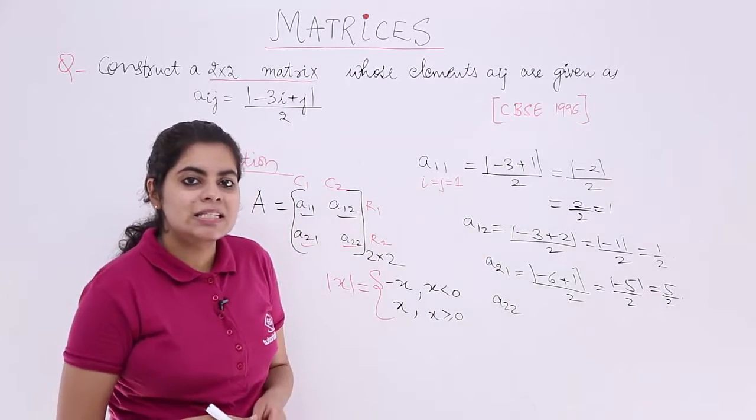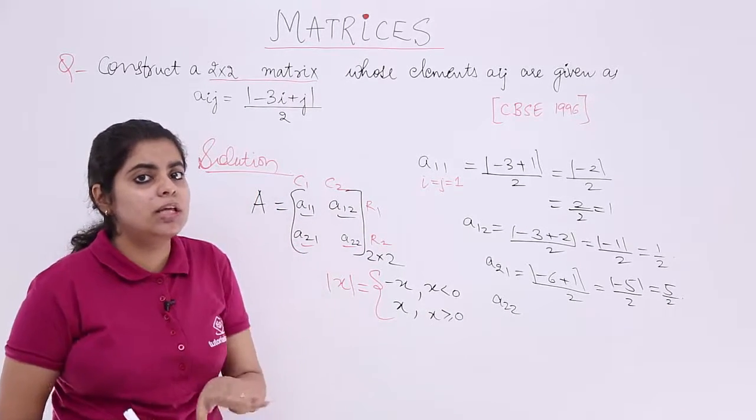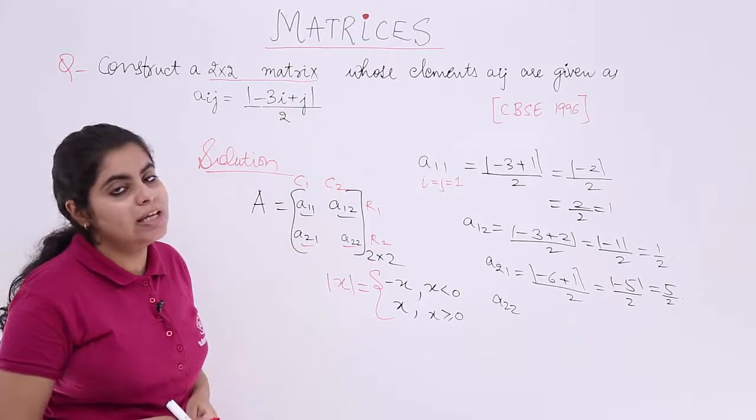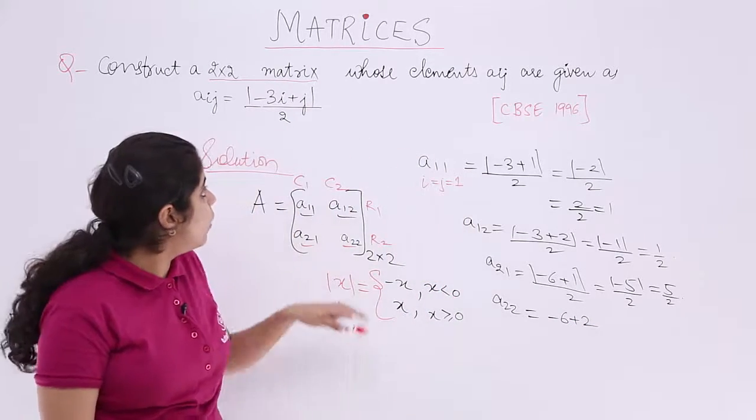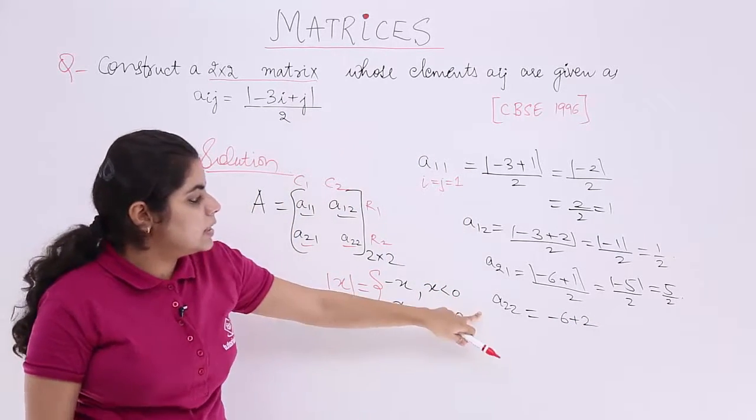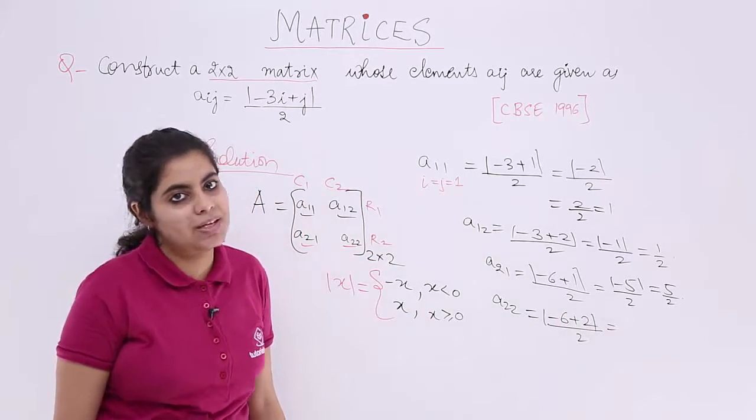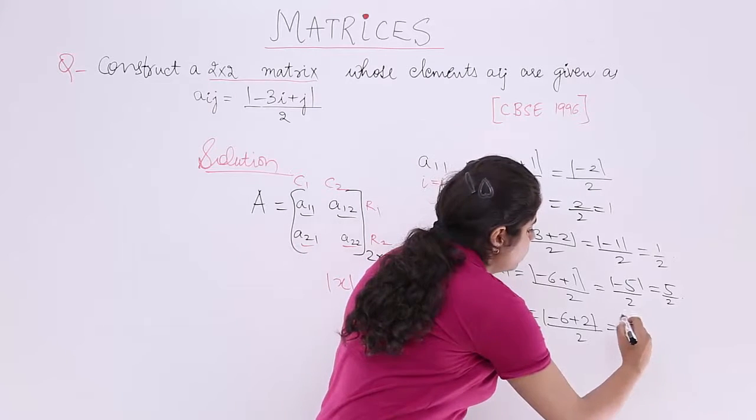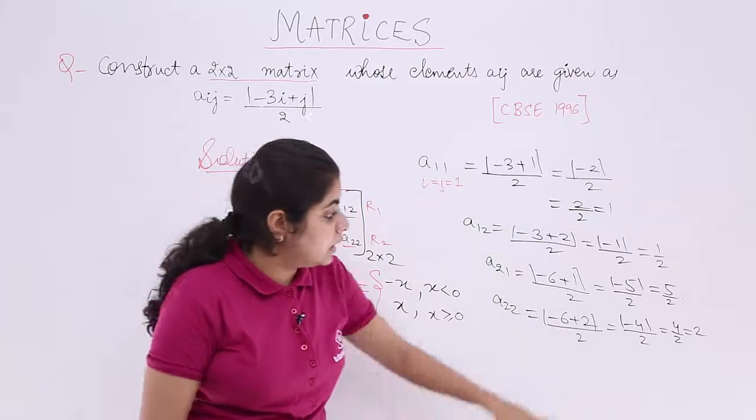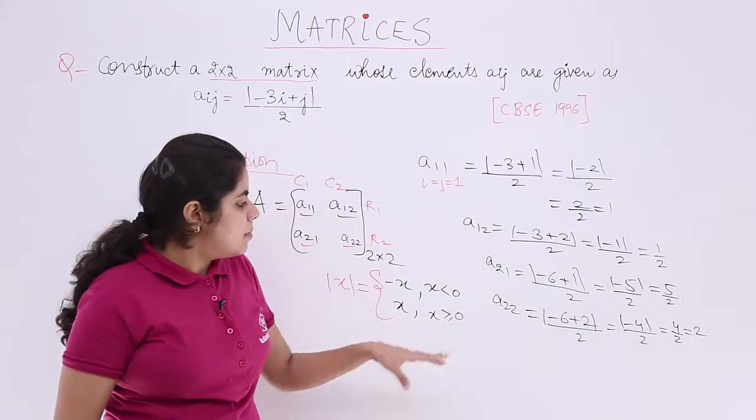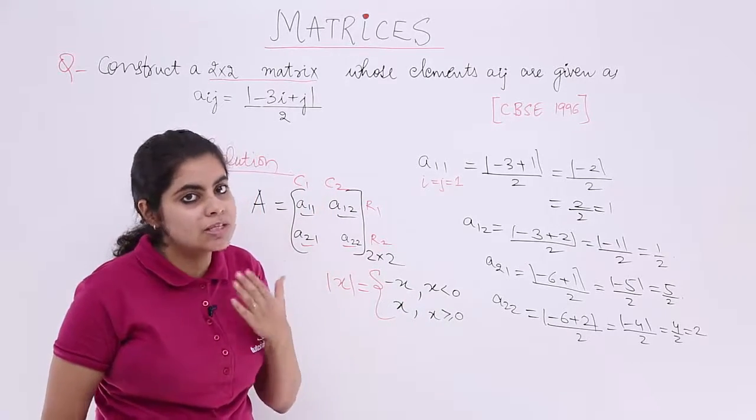Last but not the least, A22. A22 means i and j are both equal to 2. So minus 3 into 2 is minus 6 plus j is plus 2. Then you have modulus whole upon 2. What is minus 6 plus 2? Minus 4 modulus whole upon 2. It is 4 upon 2 which is 2. Minus 4 is less than 0, so it becomes minus of minus 4 which is 4.